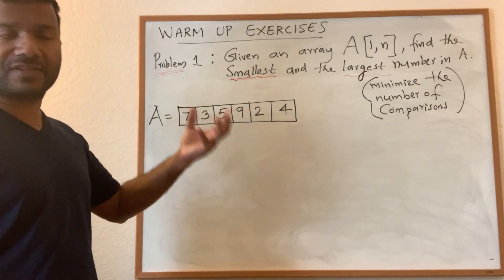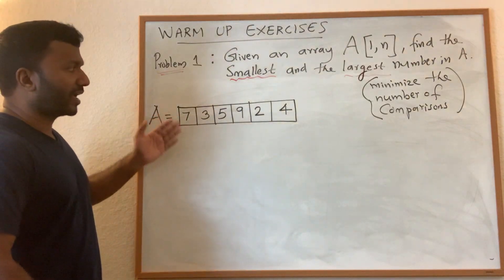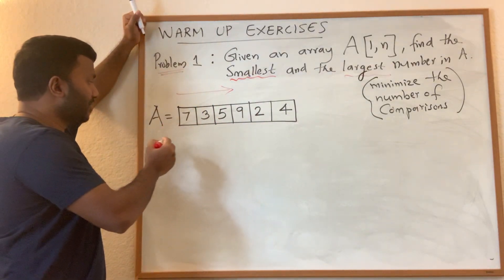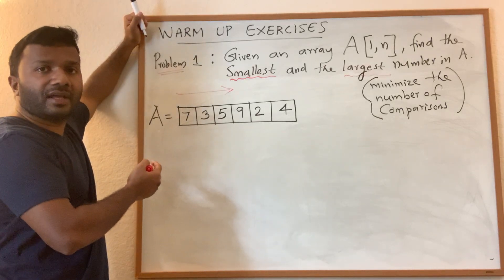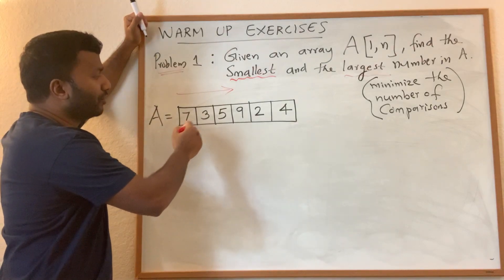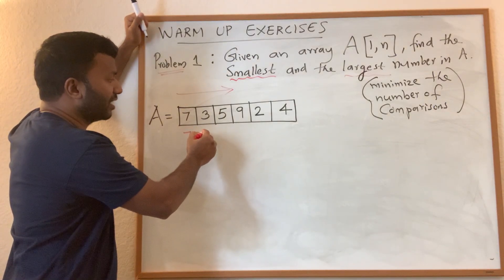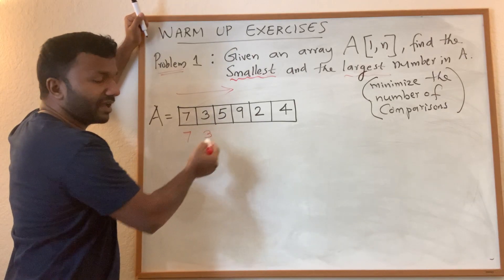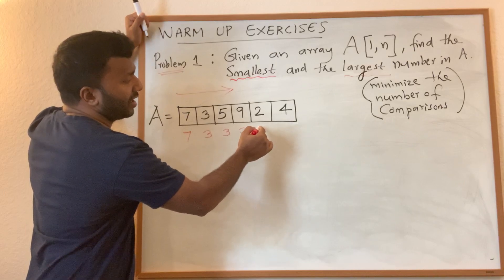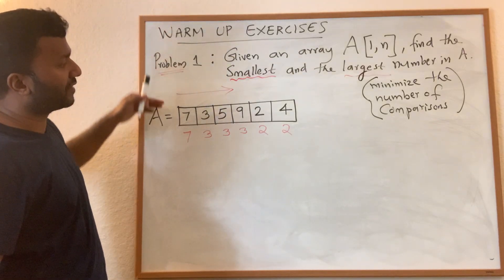The brute force solution finds the smallest and largest independently. To find the smallest, scan the array from left to right. Initialize a variable called current minimum with the first number — say seven. Move to the next element: update current minimum to three. Continue scanning: still three, then update to two. This way we find the smallest number.